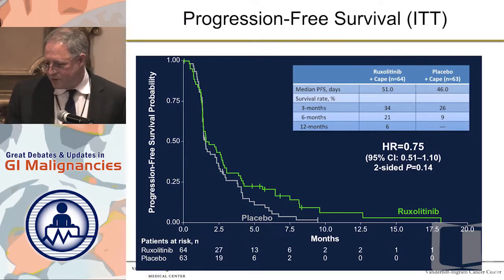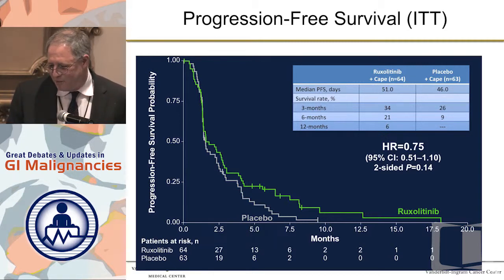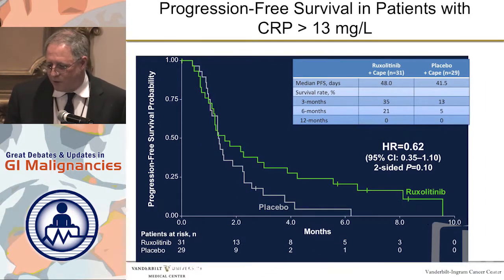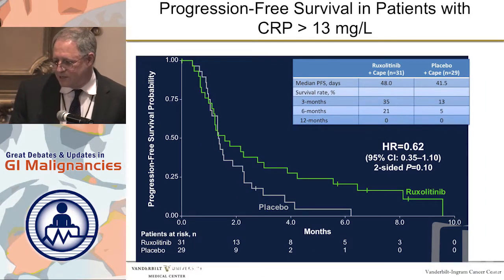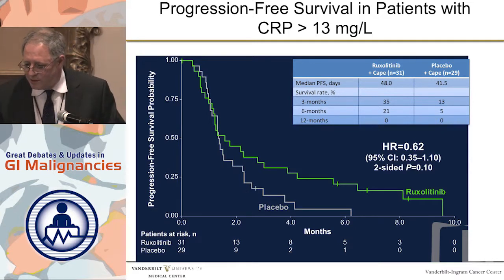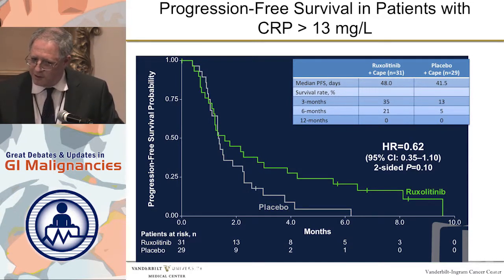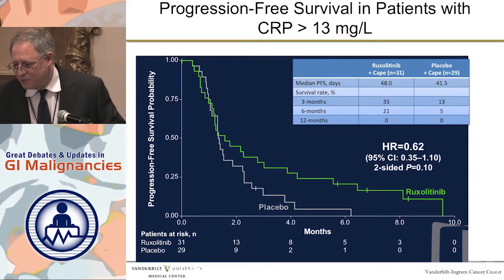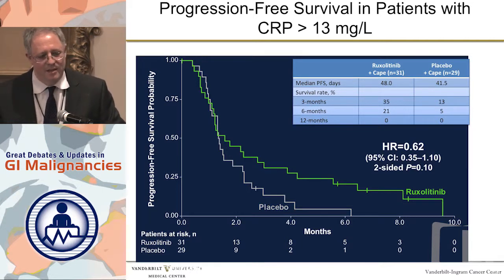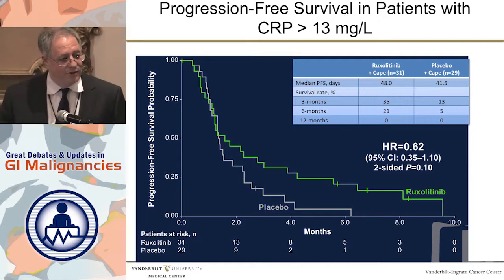This is the progression-free survival, as pointed out by Tony — marginal at best and definitely negative for the overall group. But again, when you take the C-reactive protein higher than 13, it starts separating. This is where it's important to look at the hazard ratio, not the median. The median: one week. The hazard ratio: 0.62, because the separation happens late. Only a subset of the subset actually probably benefits.